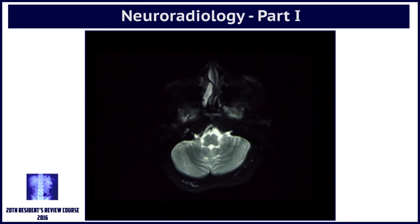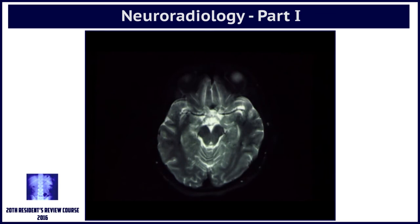A T2 weighted image is an image where there is varying tissue contrast because of differences in the T2 relaxation time.